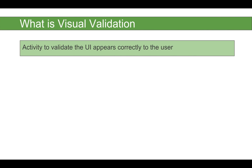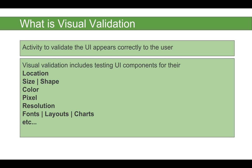Let's get started and first see what is visual validation. Until now we have been using Selenium for functional testing, but we can also use different tools along with Selenium to check the UI of our web applications. This includes checking the color, size, and shapes of different elements, their locations and positions. Visual validation is a service where we can validate the UI and check it appears correctly to the user. It includes testing of UI components for their location, size, shape, color, pixel, resolution, fonts, layout, charts, and so on.